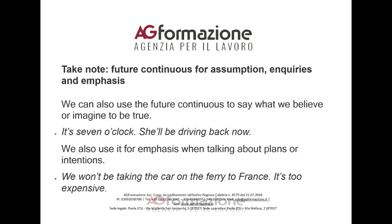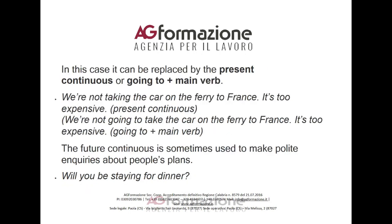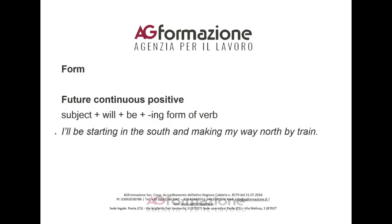Take note: future continuous for assumption, inquiries, and emphasis. We can also use the future continuous to say what we believe or imagine to be true. For example: It's 7 o'clock — she'll be driving back now. We also use it for emphasis when talking about plans or intentions. In this case it can be replaced by the present continuous or 'going to' plus main verb. For example: We're not taking the car on the ferry to France — it's too expensive. (Present continuous.) We're not going to take the car on the ferry to France — it's too expensive. (Going to plus main verb.)